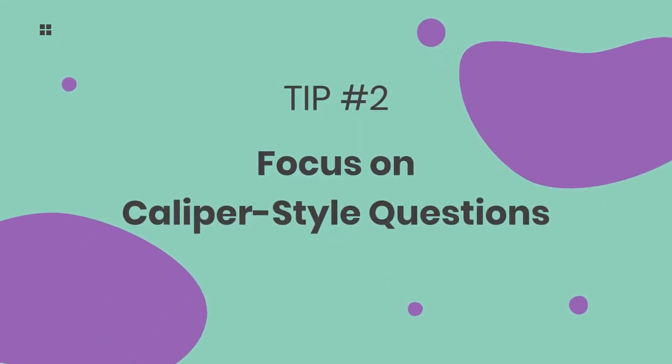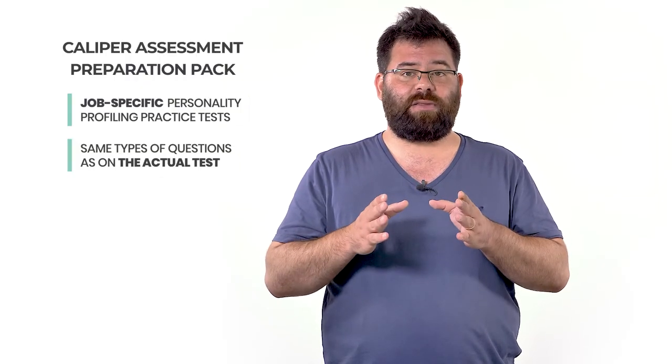Second tip: focus on Caliper-style questions. When practicing the cognitive ability section, many candidates think they must be prepared for anything, and so waste their time and effort on thousands of practice questions in dozens of subjects. Don't do that! Focus on the types of questions specific to the Caliper Assessment to maximize your performance. At JobTestPrep, we have implemented both these guidelines into our Caliper Assessment preparation pack — job-specific personality profiling practice tests, and cognitive practice tests that focus only on the types of questions on the actual test.